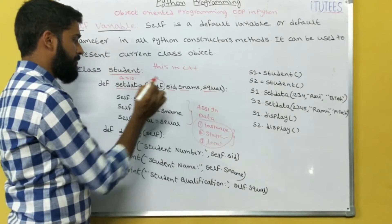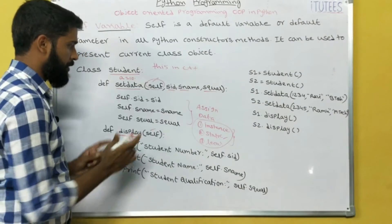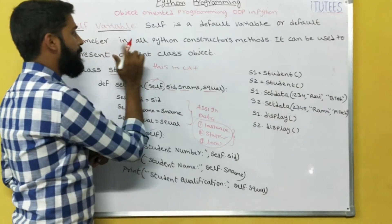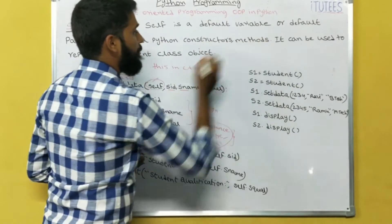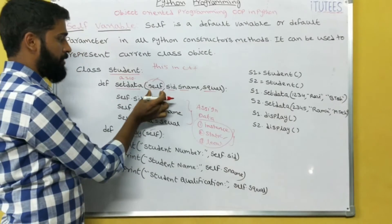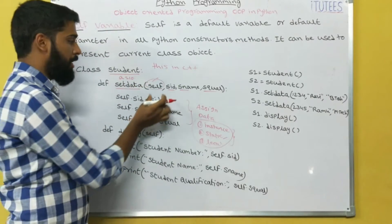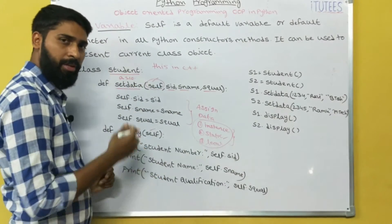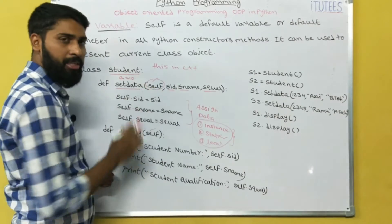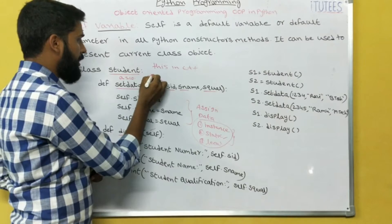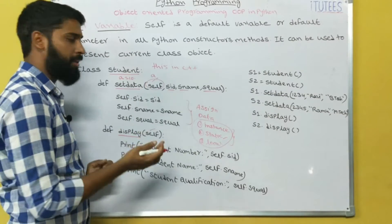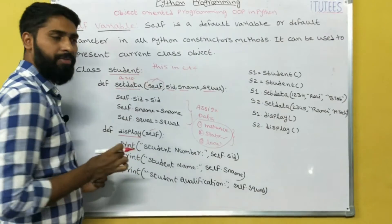Self is a default variable or default parameter in all methods. The first parameter in any method or constructor is always self. For example, if you use 'a' instead, then 'a' acts as self. By default we use self.